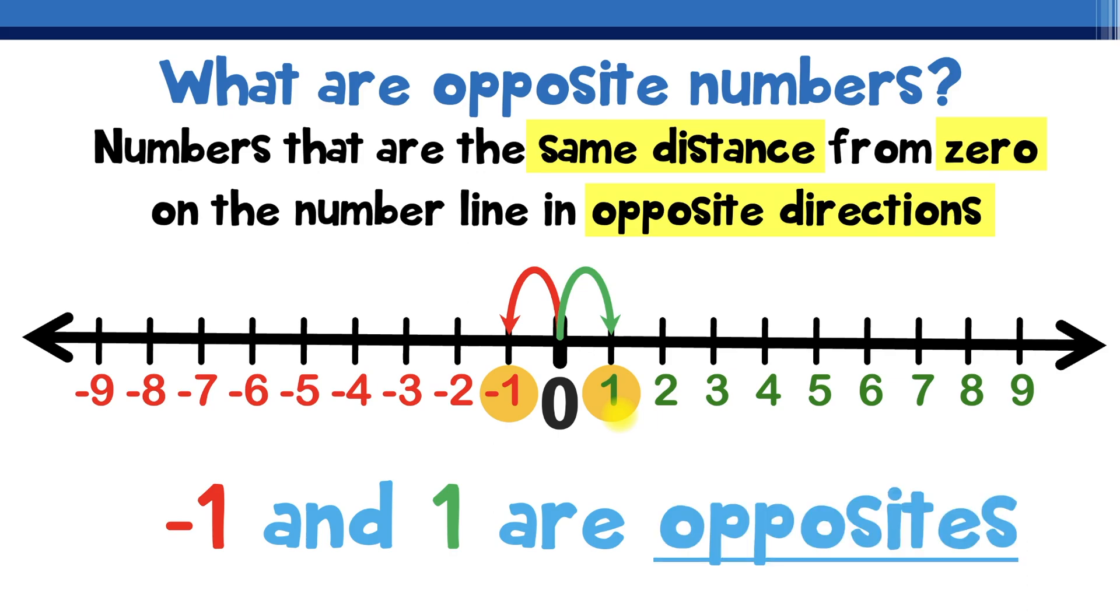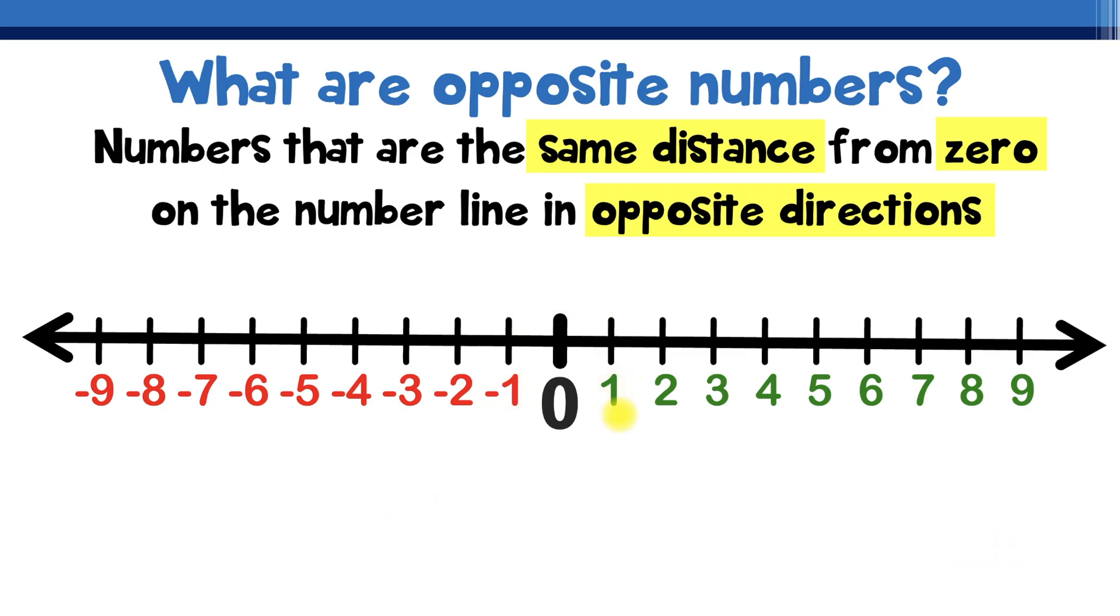Let's take a look at another example but this time let's say we're starting off with positive five. How far is positive five away from zero on the number line? Well from zero it's five spaces to the right. So the opposite of something that's five spaces to the right is five spaces to the left and that's exactly where we find negative five. So that means that positive five and negative five are opposites.